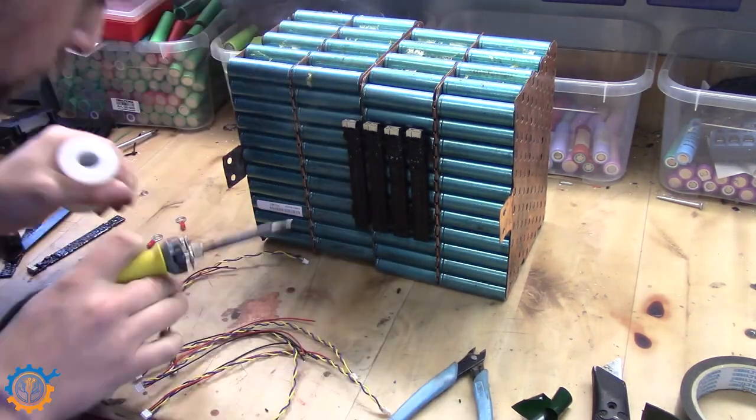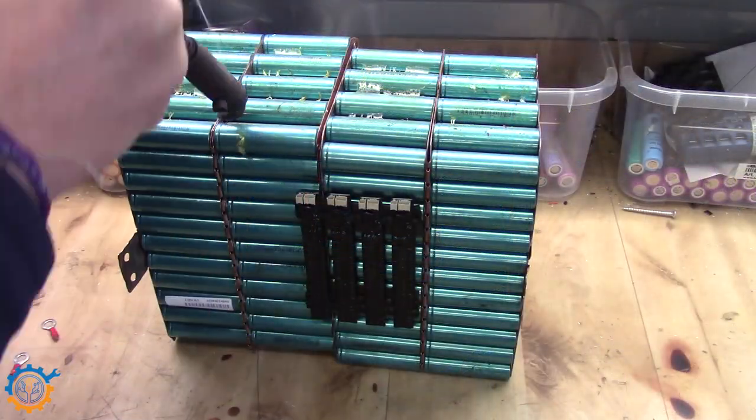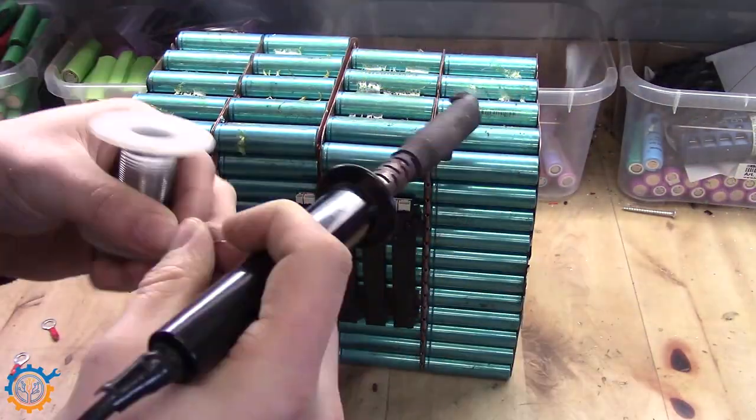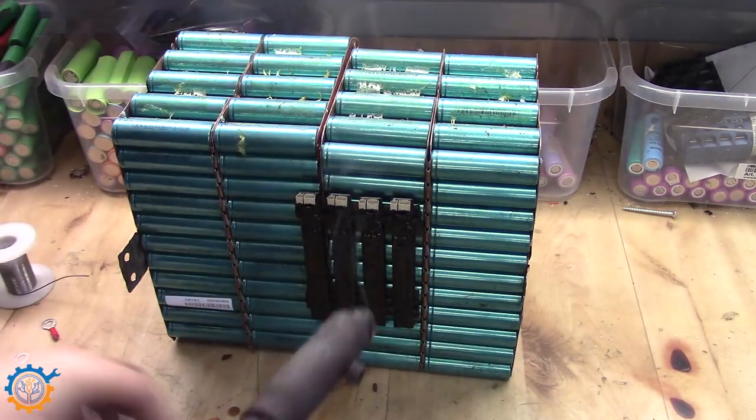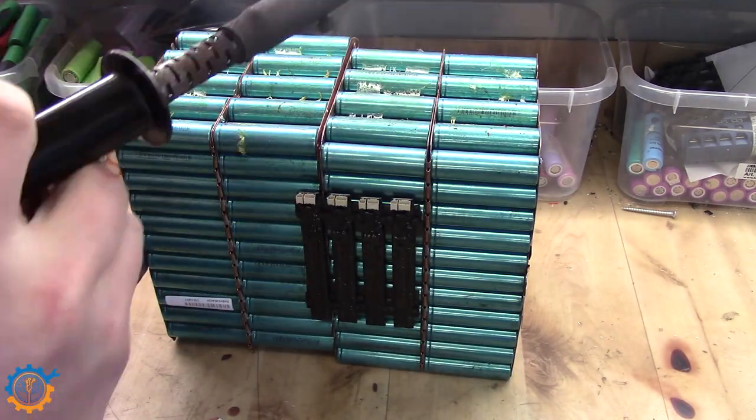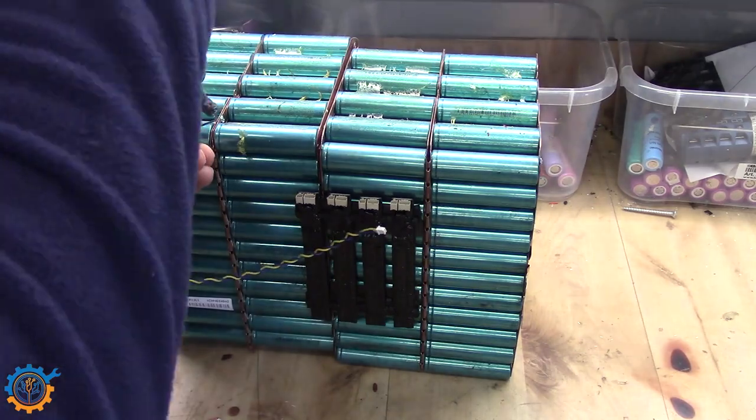And then I bring up the big iron. For making sure that I get contact to the copper plates that are connected to the cells. I don't want to heat it more than necessary. So the big iron does the job very very quickly.